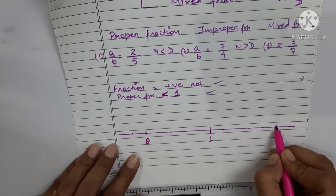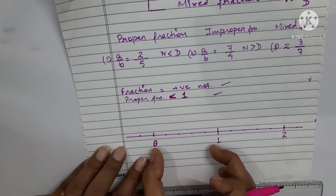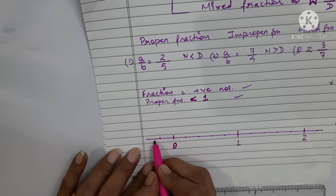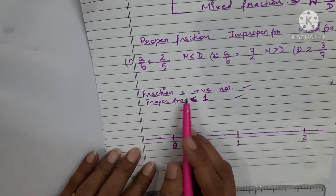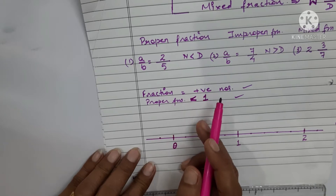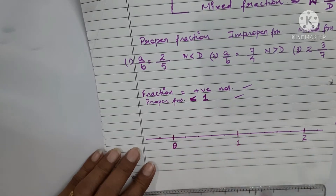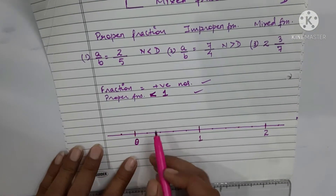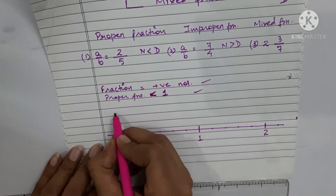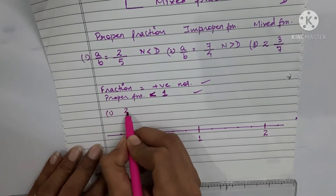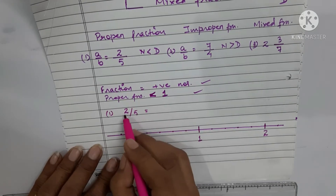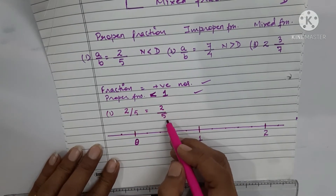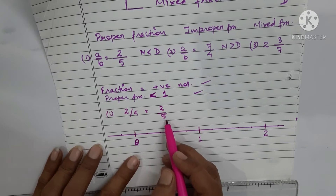We take another unit here up to two. To the left side of zero, we will not consider any numbers because fractions are always positive — fractions are made up of only whole numbers, that is why we will not go before zero.